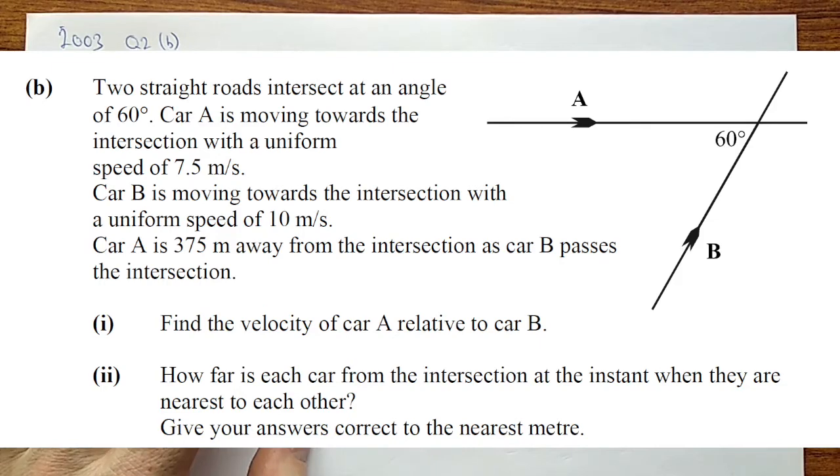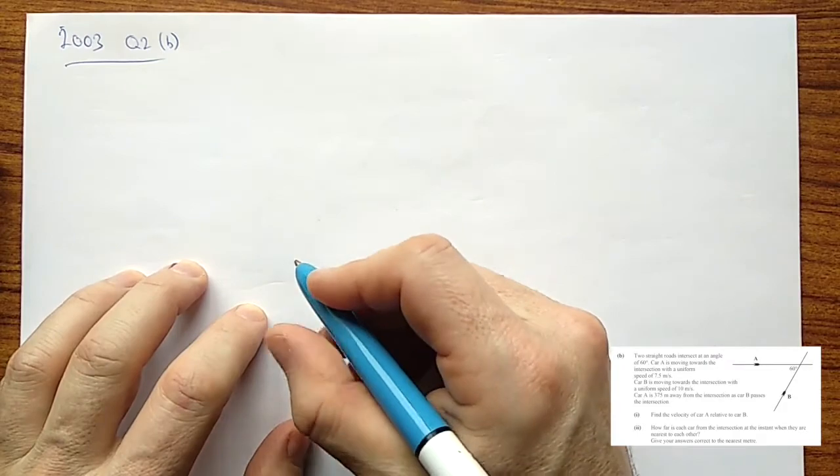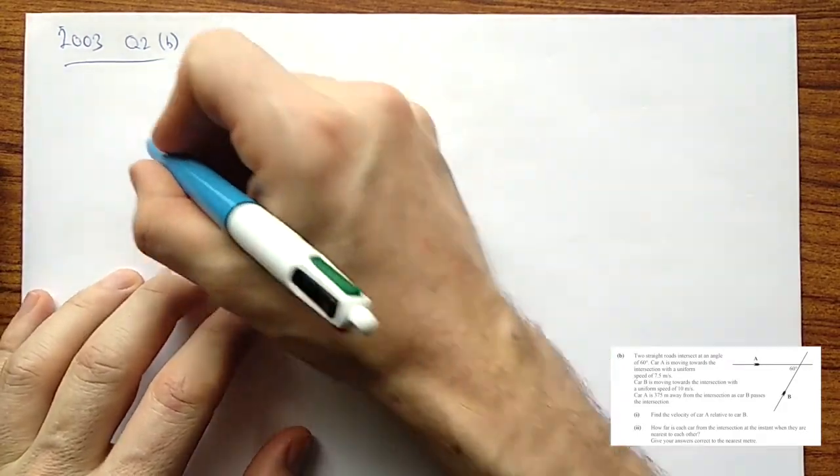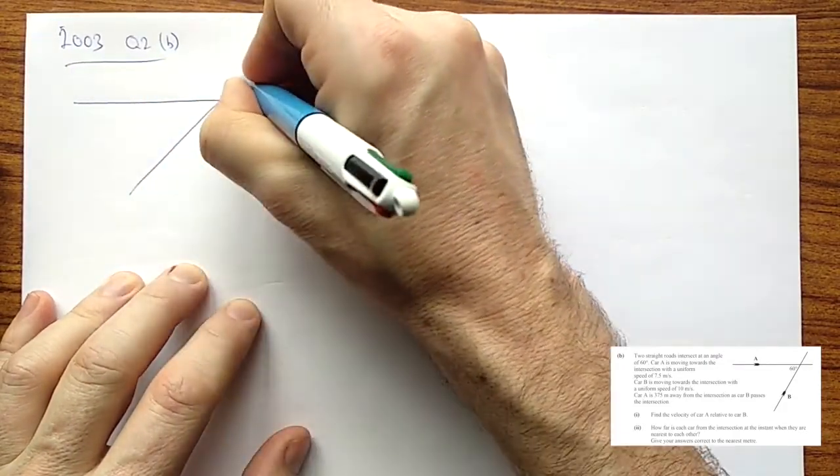So we have two straight roads intersecting at an angle of 60 degrees. This is the only difference we need to worry about. Car A is moving at 7.5 meters per second. You can see in the arrows going to the right, so 7.5i. Car B is moving at 10 meters per second at an annoying angle, so we have a small bit of work to do here. So let's begin to lay this out. We're going to have two diagrams overall. So there is our two roads.